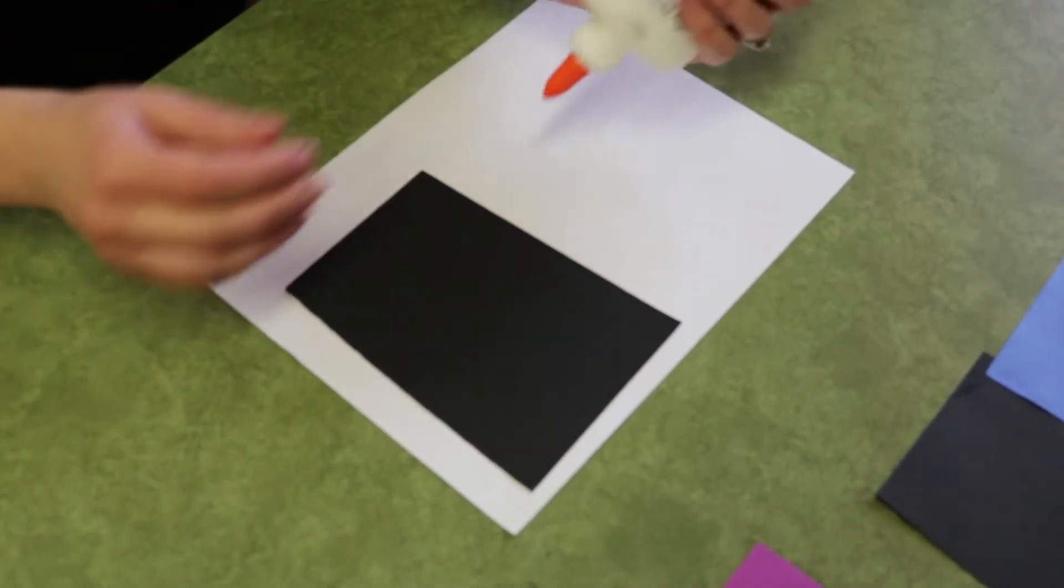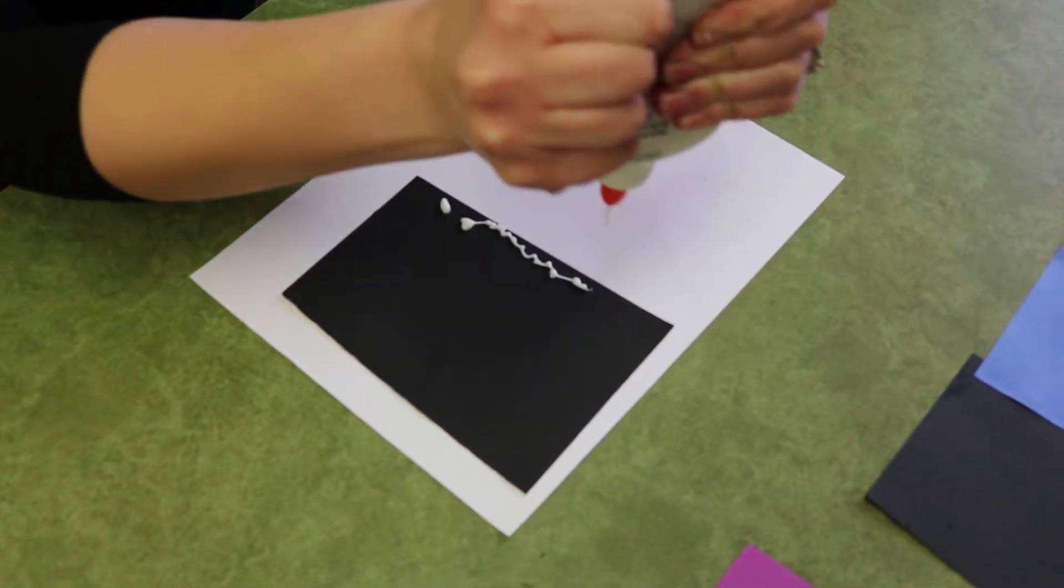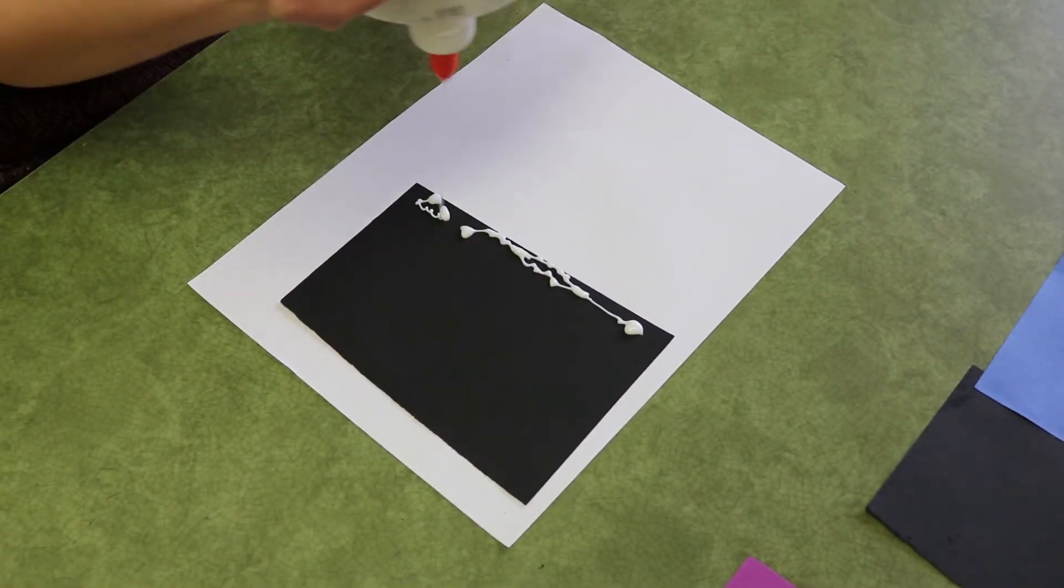Here's what not to do: using too much glue so it starts to make a big puddle and then it will proceed to drip. Don't do that.